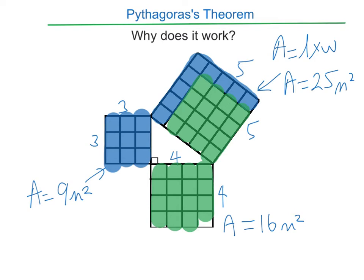What this shows is that the area of this big square here, which is based on the five from the hypotenuse, is actually equal to the area of this square plus the area of that square. Another way of writing that is to say five squared equals three squared plus four squared, which is 25 equals nine plus 16. And you can see that's true because nine plus 16 is indeed 25.